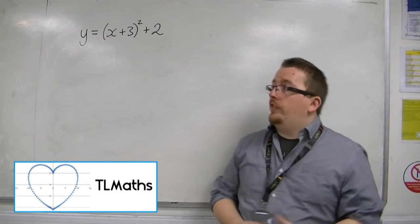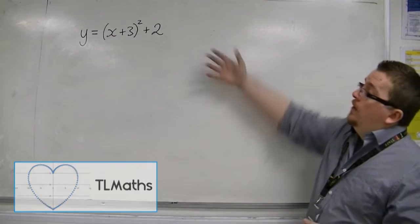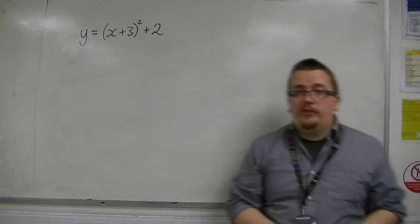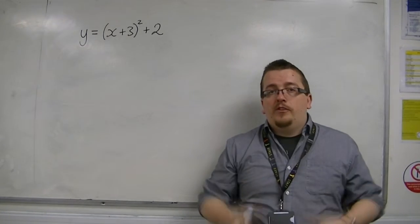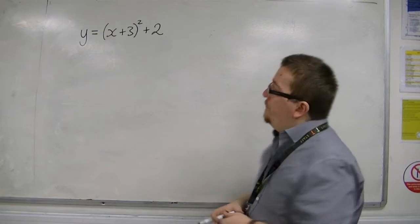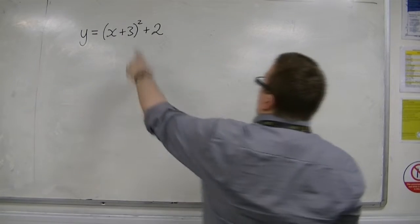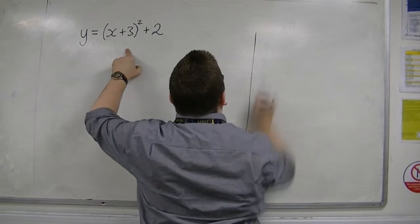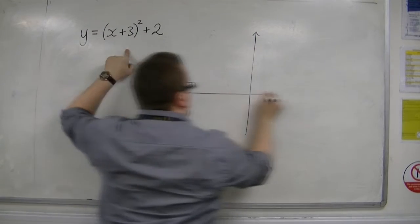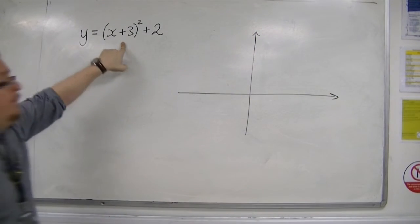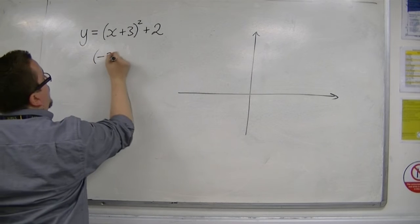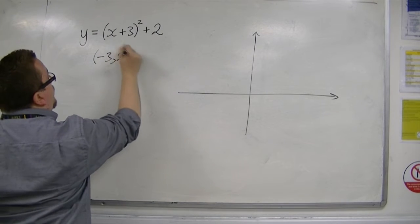Let's say I wanted to sketch y equals x plus 3 all squared plus 2. This is going back to Core 1 material. Because this is in completed square form for the parabola, I should be able to identify that the vertex is minus 3, 2.